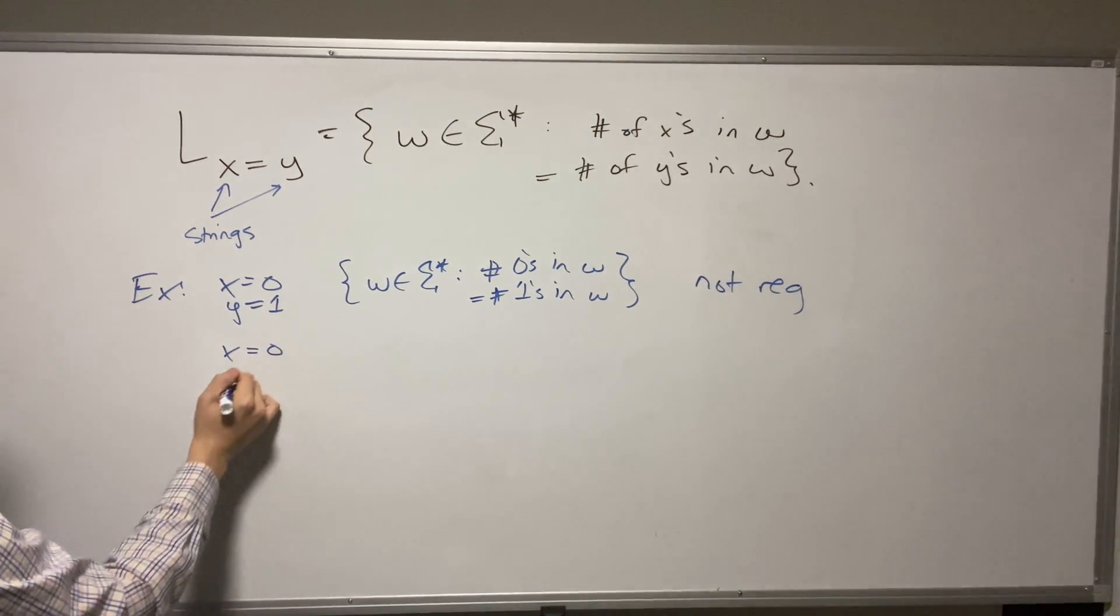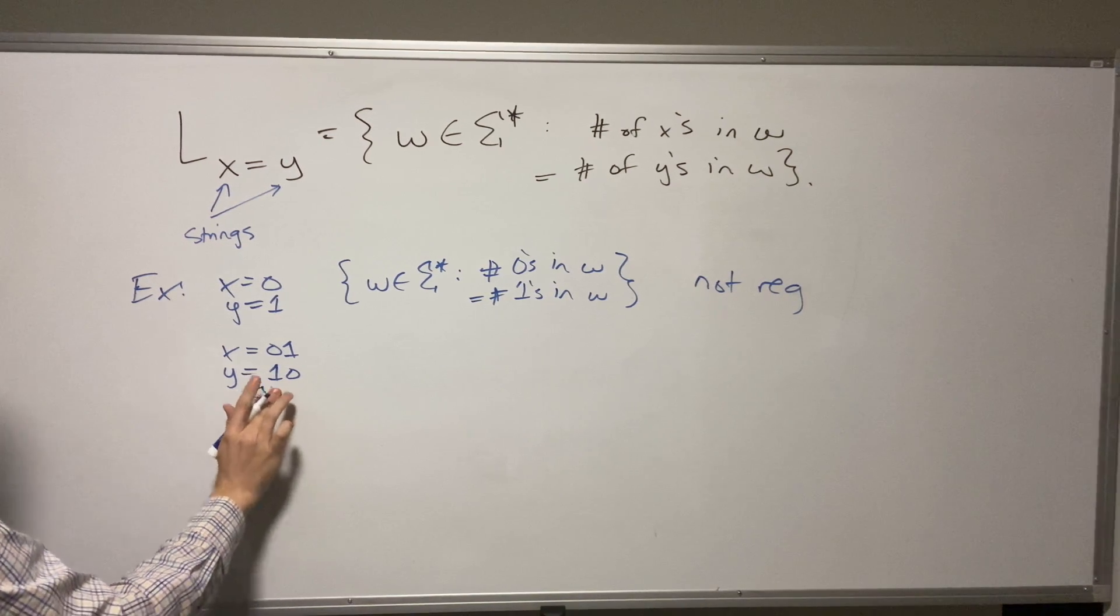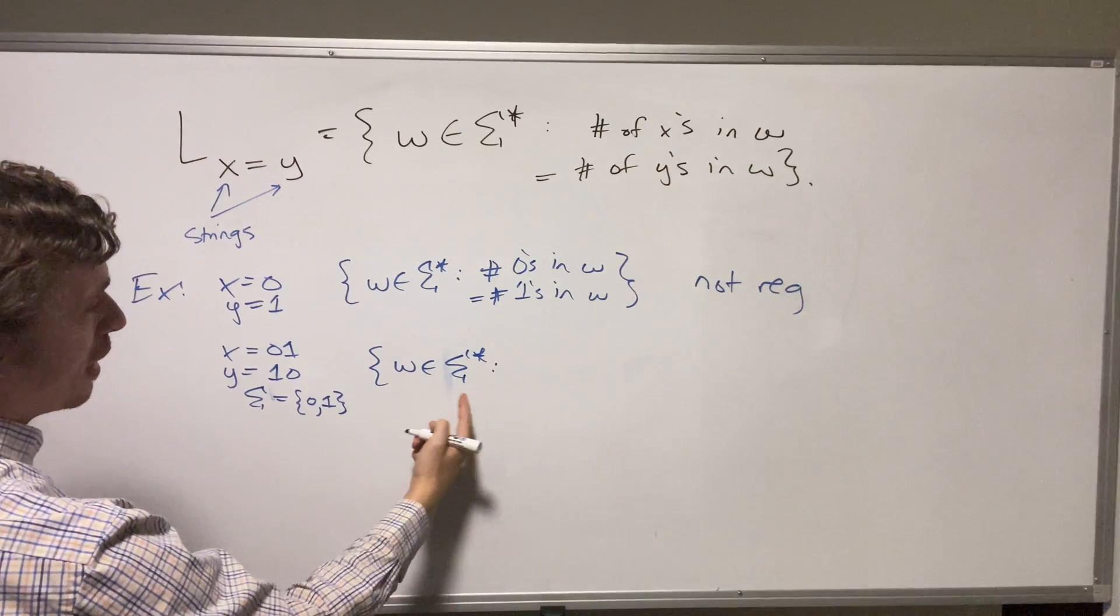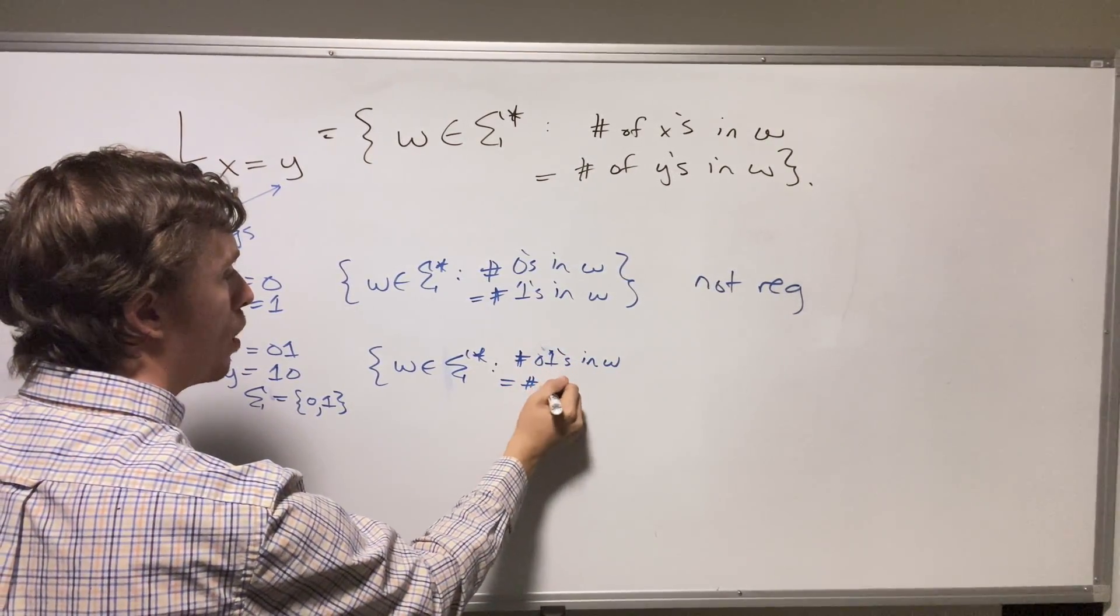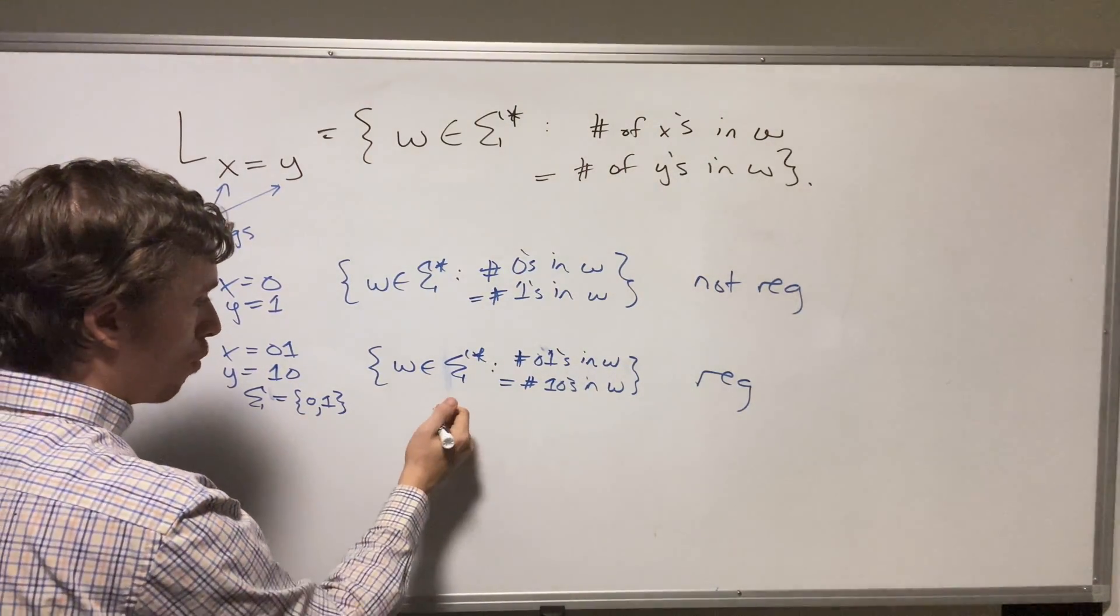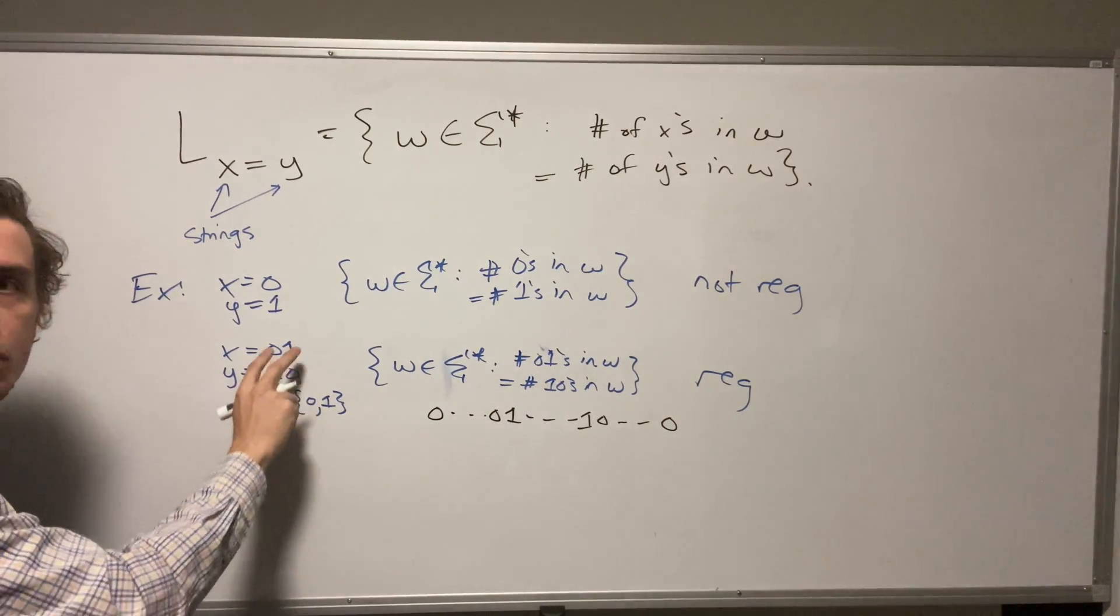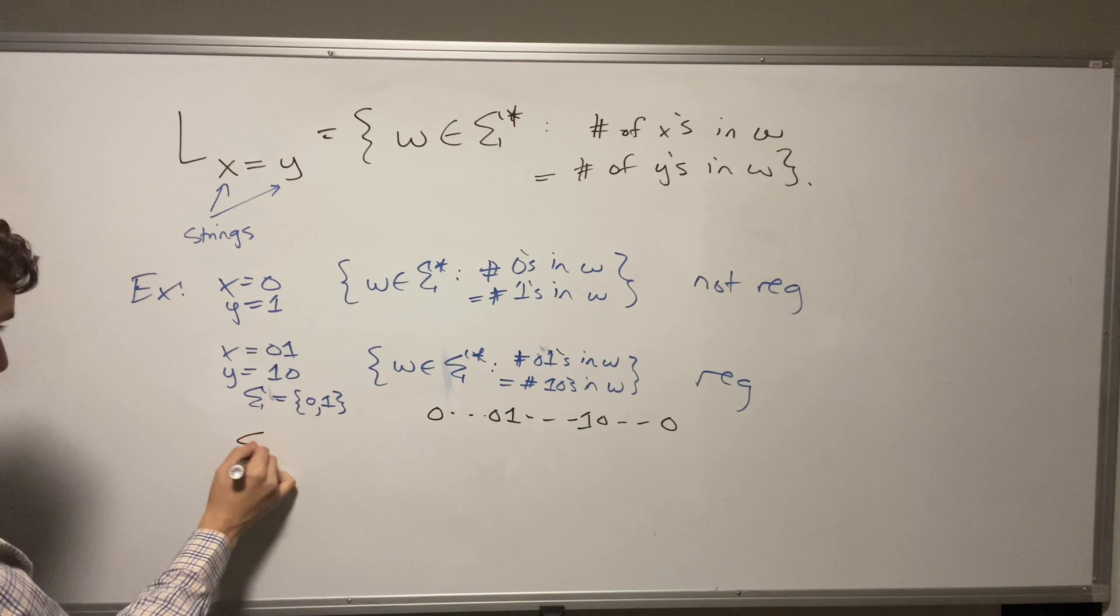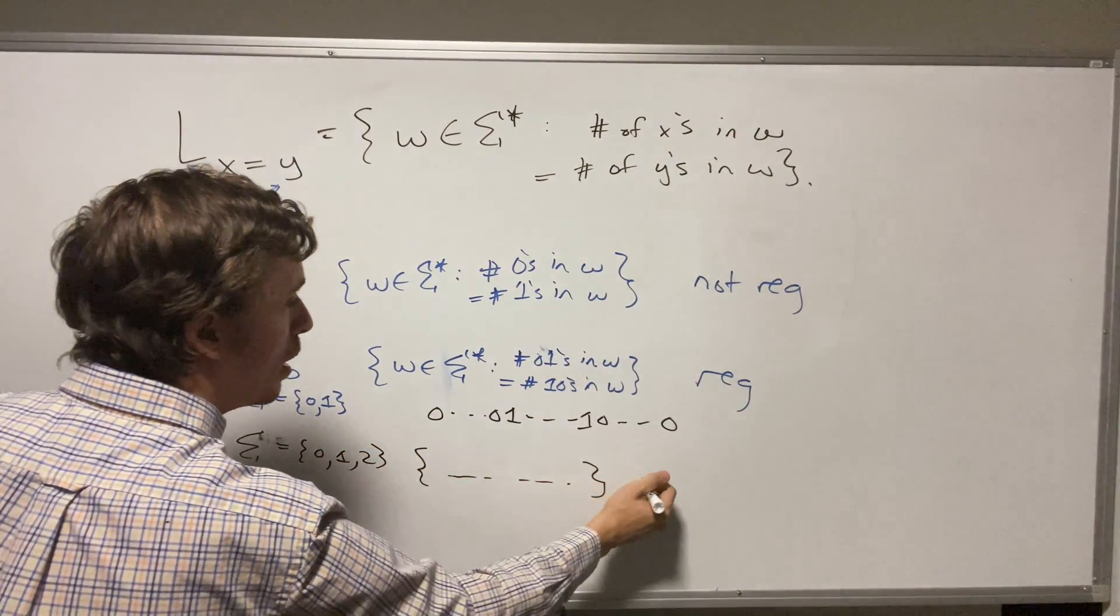But another one you could consider is X equals zero one, sorry, Y equal one zero. And it's actually important for this one what the alphabet is. So in this case, the alphabet is going to be zero one. So just the character zeros and ones. So that language is just copying the pieces over. So it's all the strings in this thing star, such that the number of zero ones in W equals the number of one zeros in W. And it's pretty easy to show that this thing is regular because effectively, because the alphabet is zeros and ones, we effectively are going to have a bunch of zeros and then a bunch of ones. And it must start and end with the same character. If the number of one zeros and zero ones is the same, that the number of times it switches back and forth has to be an even number.